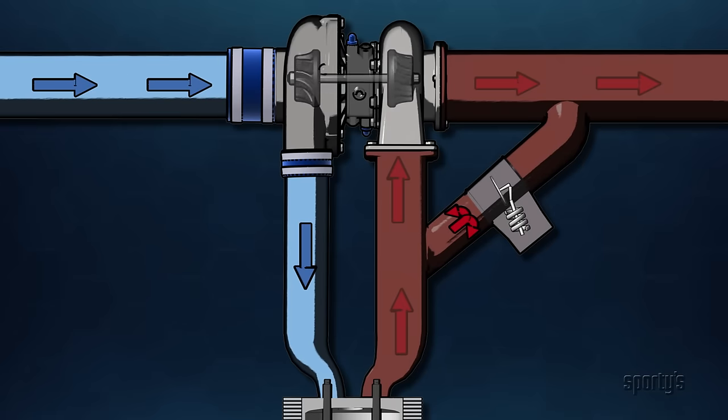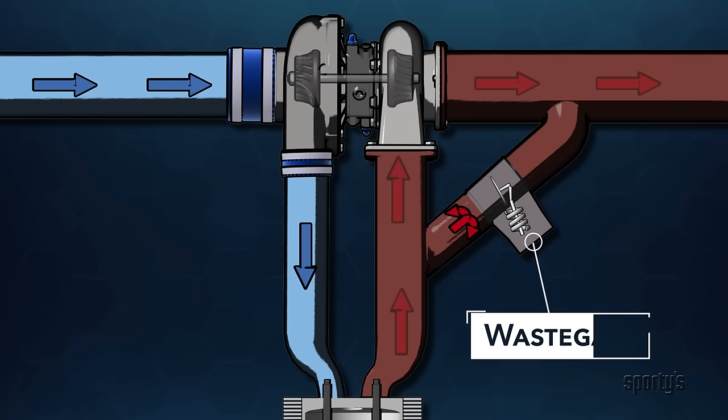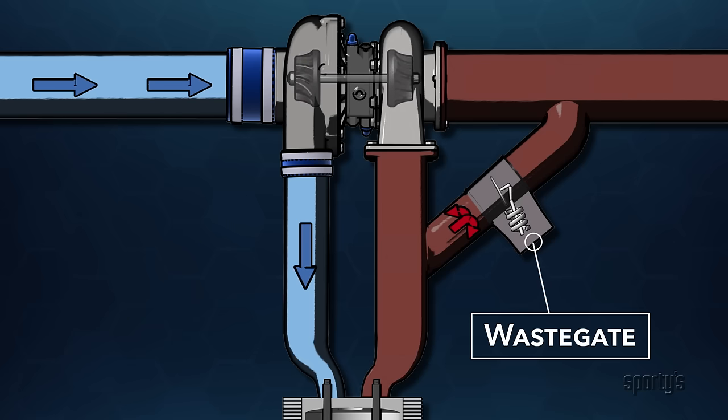Manifold pressure at a given throttle setting depends on compressor output, which is directly proportional to turbine speed. Turbine speed is regulated by a wastegate, which can be compared to a floodgate in a dam.